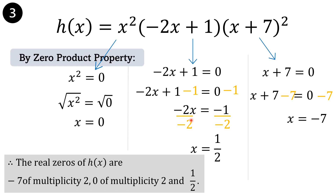Therefore, the real zeros of h of x are: negative 7 of multiplicity 2 from the binomial x plus 7 quantity squared; 0 of multiplicity 2 because x appears twice; and 1 half. Counting all the zeros: 2 plus 2 plus 1 is 5. The degree of the polynomial function is 5. Therefore, the zeros of this function are complete.